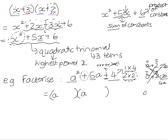So if we try a plus 1 and a plus 4, testing the outers gives us 4a, and testing the inners gives us 1a. And 4a add 1a is 5a. So clearly, my brackets must have been a plus 1 and a plus 4.